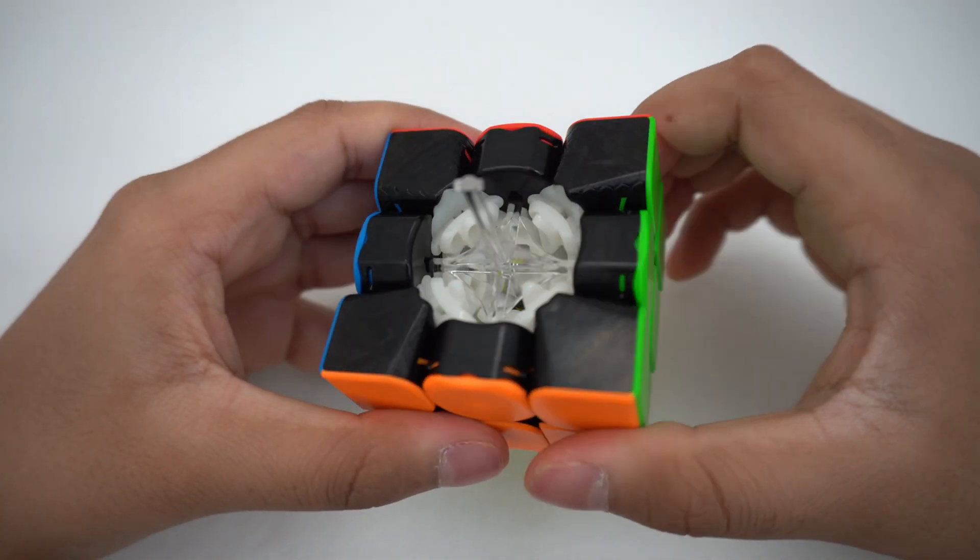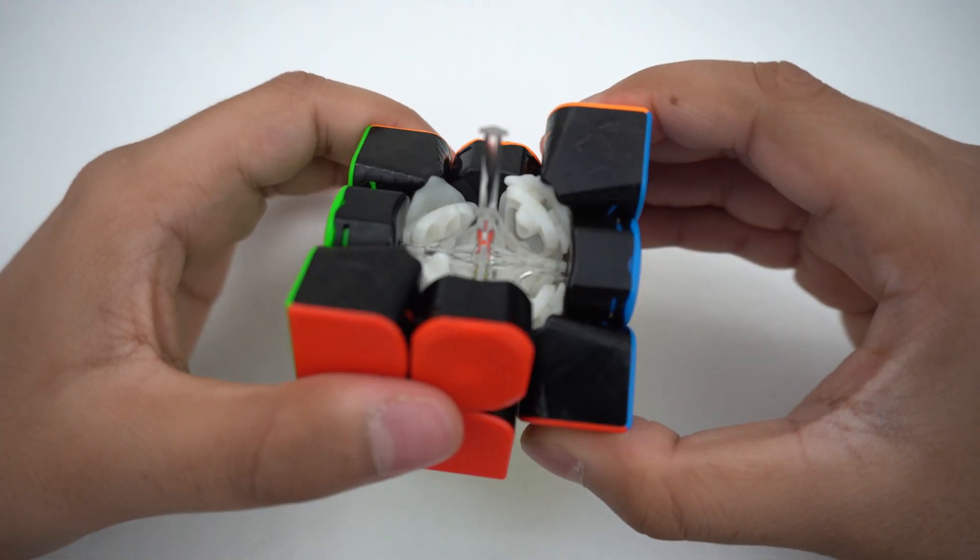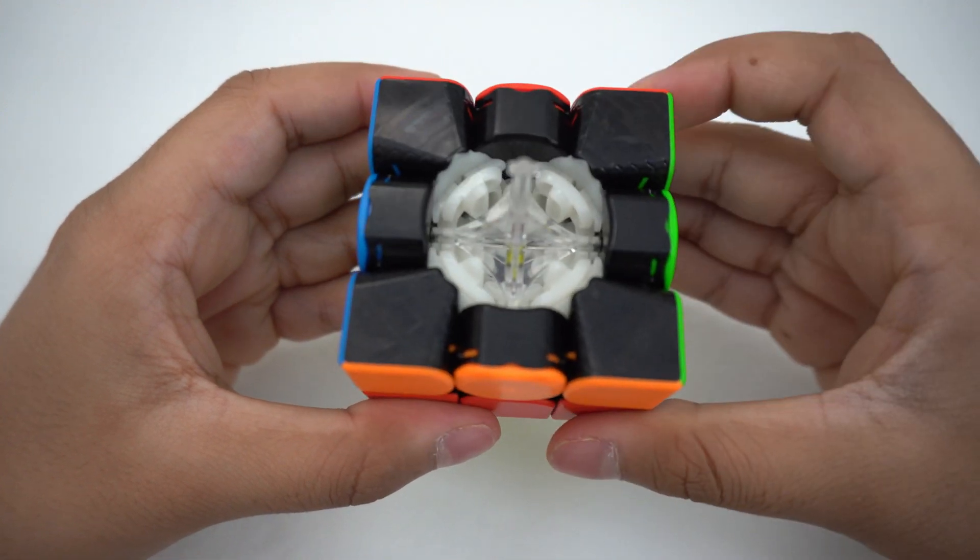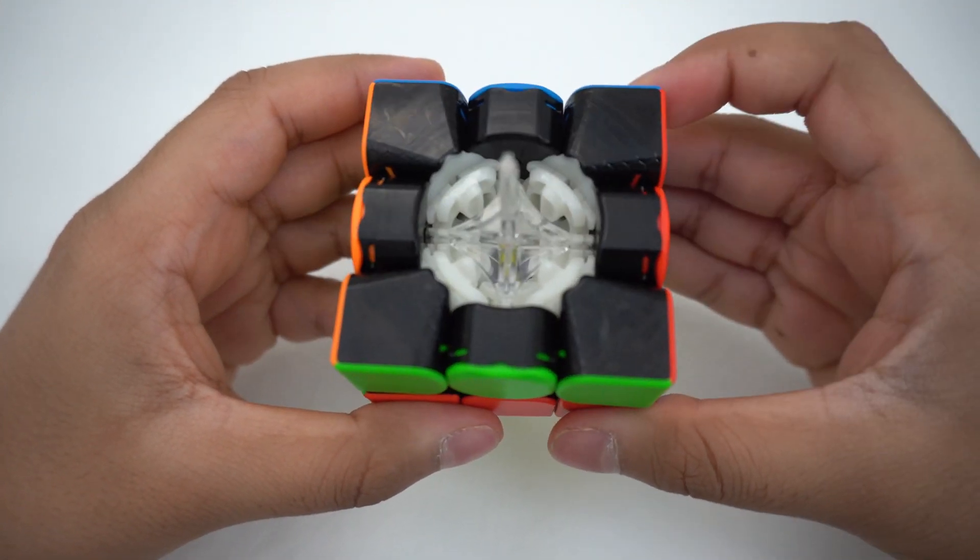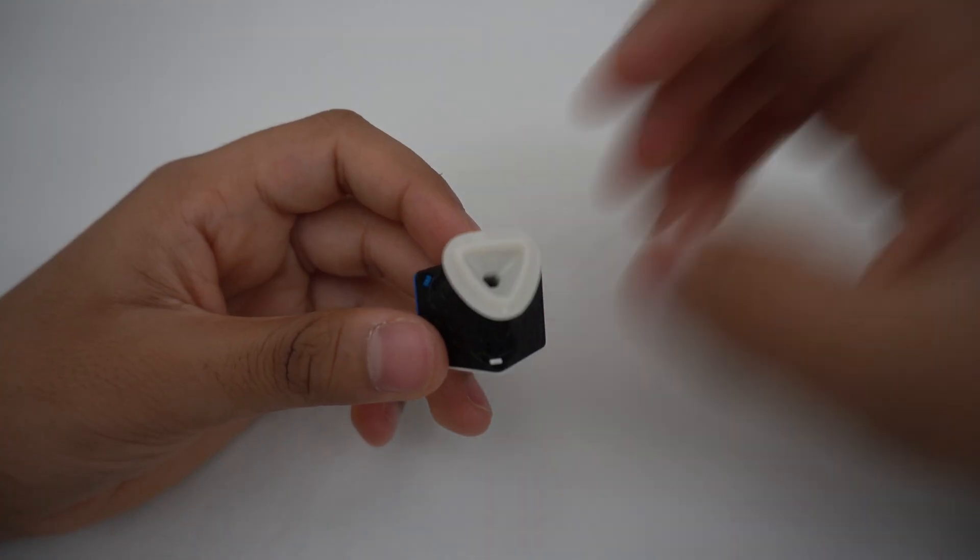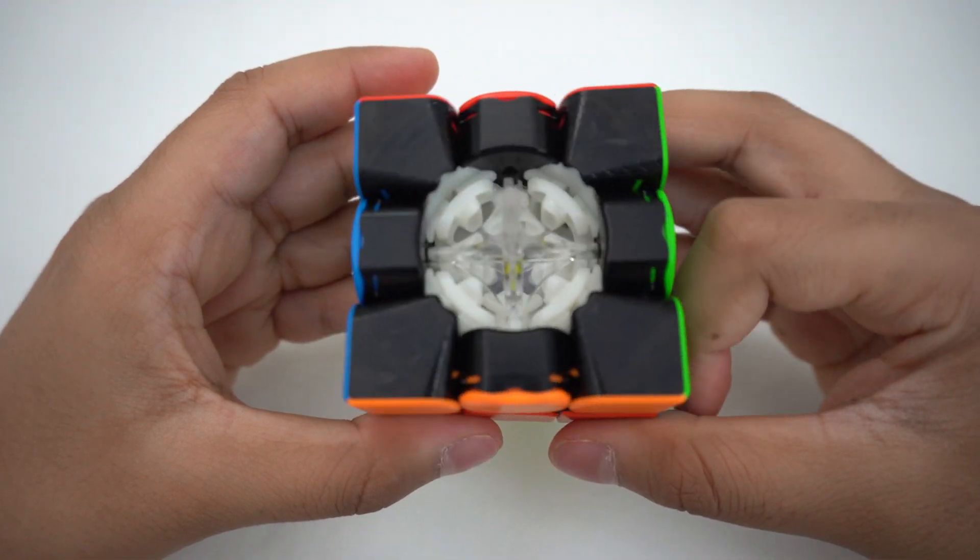Now let's look at the cube moving on the inside. You can see when turning the cube, the inside parts move with it as well. Since all the inside parts have grooves in them, a turn on the cube can be made properly. Without these grooves, the cube won't be able to turn at all. Now we know exactly how the 3x3 Rubik's Cube works.